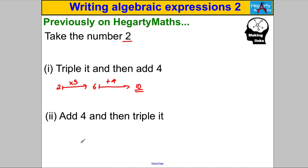Now suppose I said add 4 and then triple it — do the same operations but in the other order. Would you get the same answer? Let's give it a go. You take 2, add 4, and you get 6, and then you're going to triple it — multiply that by 3.